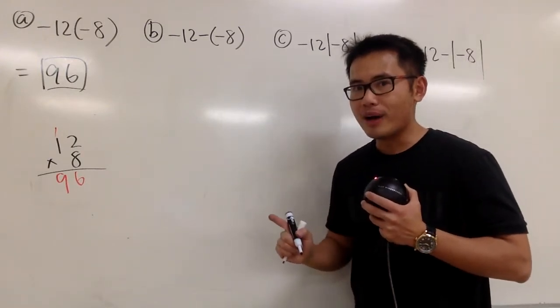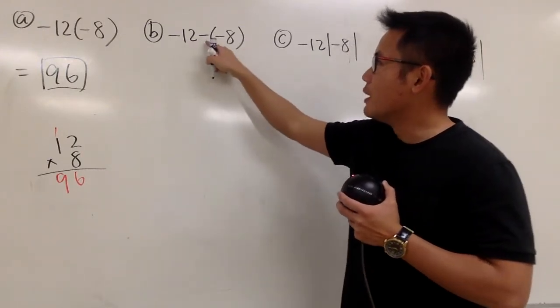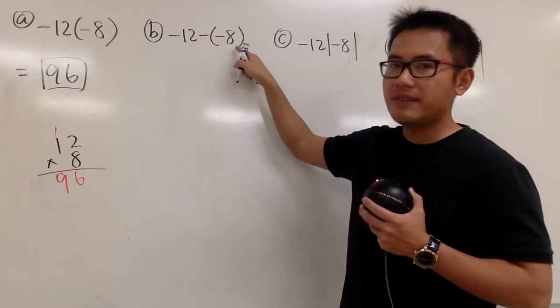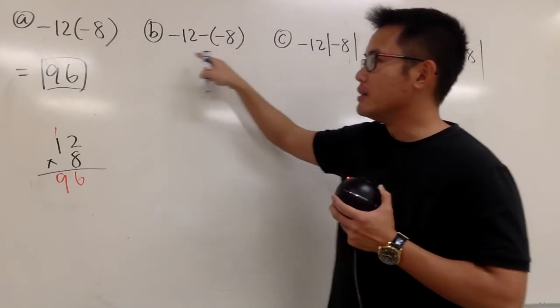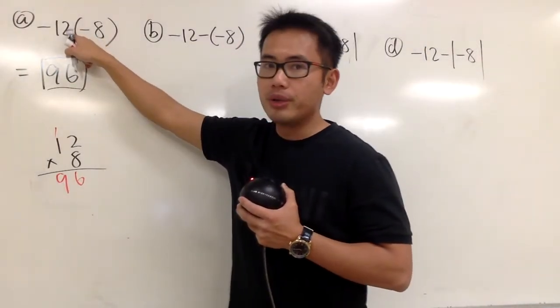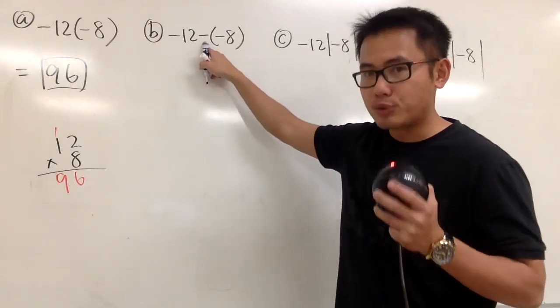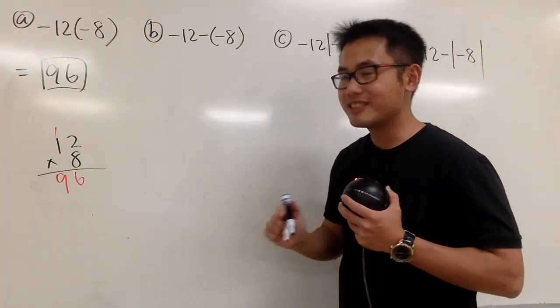Okay, for the second one, we have -12-(-8). Earlier we didn't have any operation in between, but now we do. This is a subtraction, right? And this is what we do first.